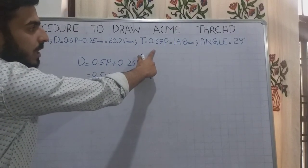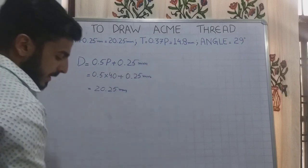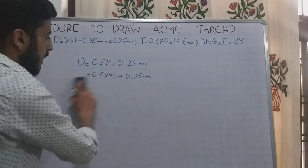And the thickness of this thread will be 0.37p, which gives up to 14.8mm.